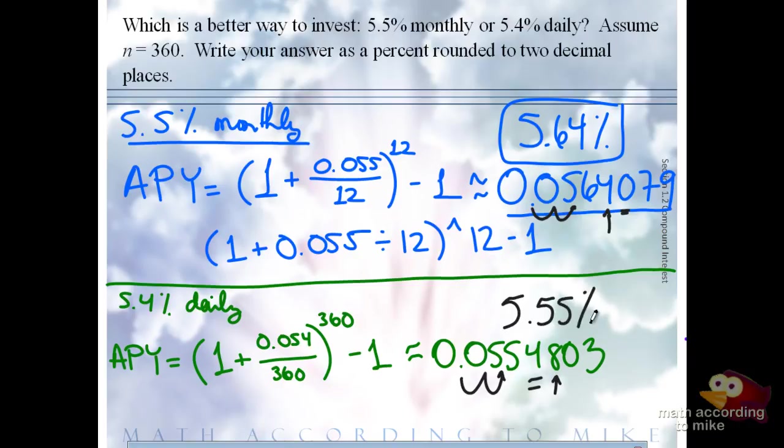So apples to apples now, because these are hard to compare in the original problem, but apples to apples, these are both simple interest for one year.